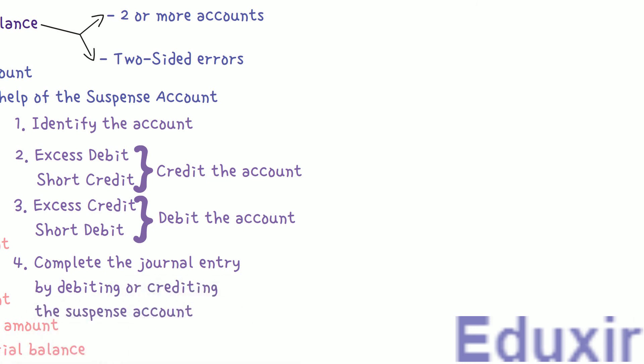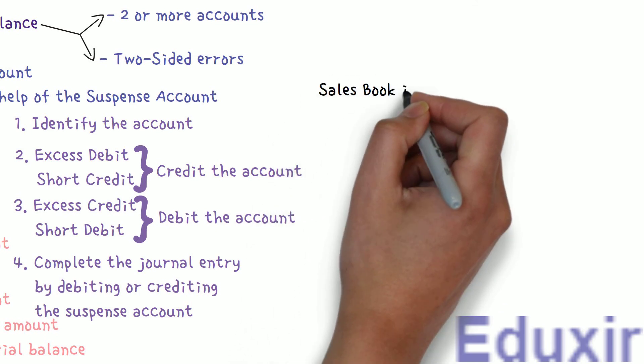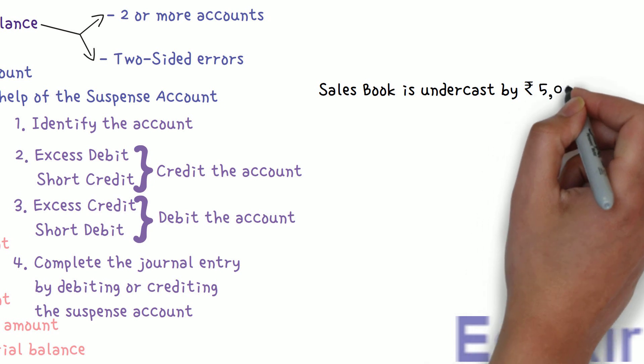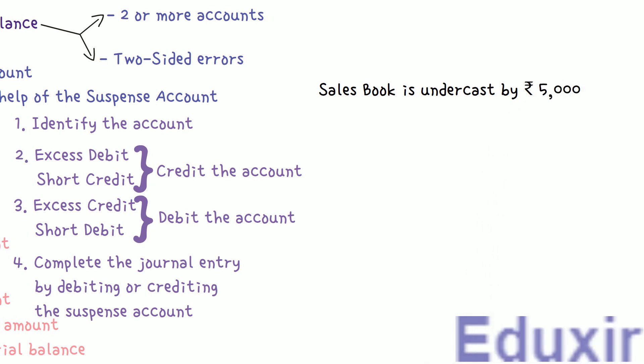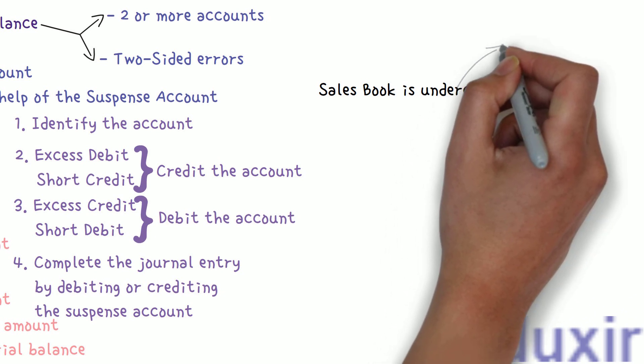Let us understand this by taking one example wherein the sales book is undercast by ₹5000. Casting means the totaling of values in a column. Here, all the entries in the amount column of the sales book are totaled, but the total is wrongly calculated ₹5000 less - for example, if the total was ₹20,000, it was calculated as ₹15,000. That is what undercasting means. Since sales is a revenue account, the sales account will have a credit balance, and undercasting results in short credit.